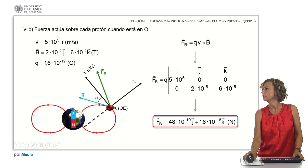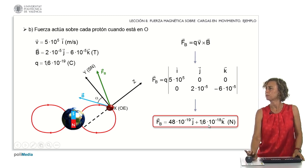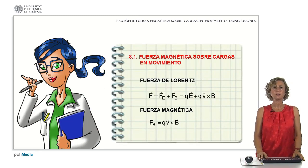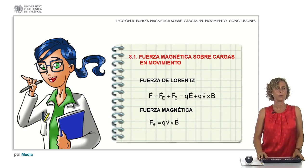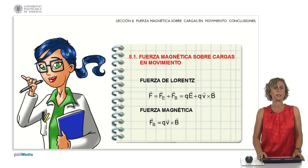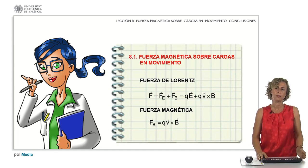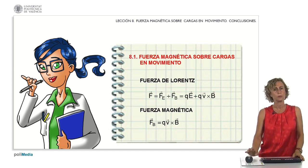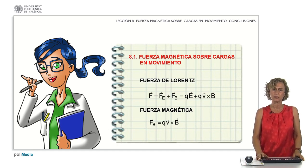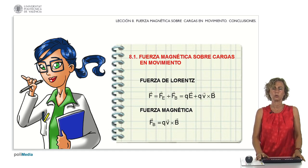The force has a component along the Y axis and a component along Z. What have we seen in this class? We've covered the magnetic force, which is the effect exerted by the magnetic field on particles in motion. Additionally, we've learned that when a charged particle resides within a region encompassing both an electric and a magnetic field, its movement is governed by the Lorentz force. Thus concludes our discussion for today. Thank you and see you in the next class.